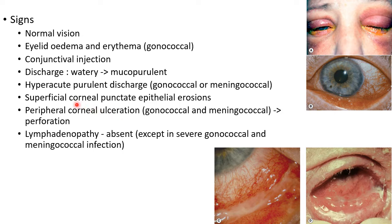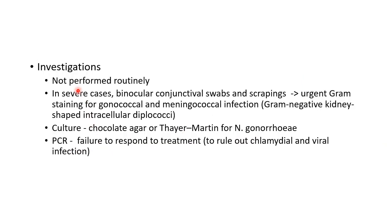There can be superficial corneal punctate epithelial erosions. There can be peripheral corneal ulceration in case of gonococcal and meningococcal conjunctivitis, which can lead to perforation. Lymphadenopathy is usually absent in acute bacterial conjunctivitis, except in severe gonococcal and meningococcal infection.